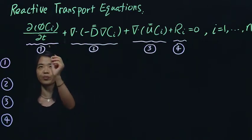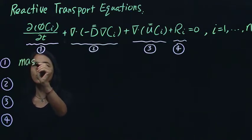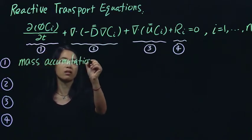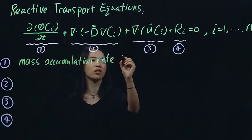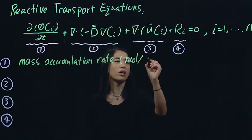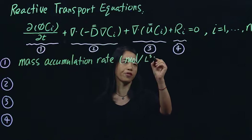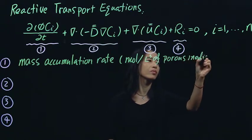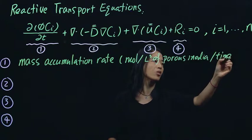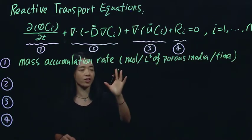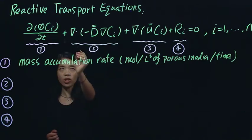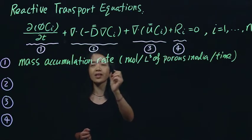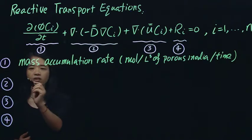So the first term is what we call mass accumulation rate. And it should have the units of moles per length cubed, which is volume of porous media, per time, whatever time you pick. But all the terms have to be consistent, have the same length and time units. So this equation really says mass accumulation rate depends on several different processes. The first term is the rate itself, the overall rate.